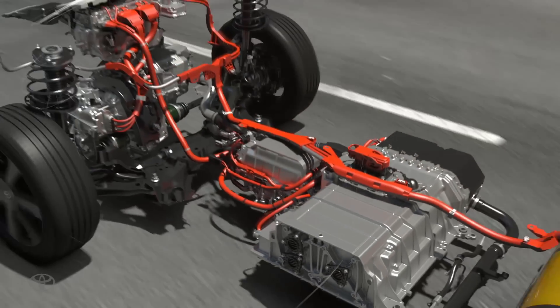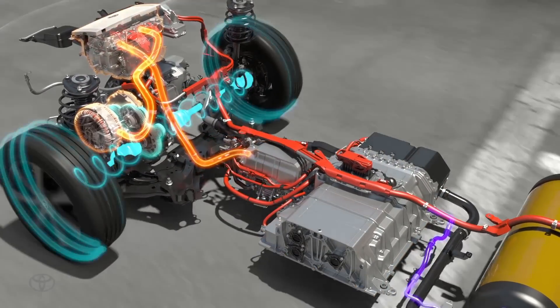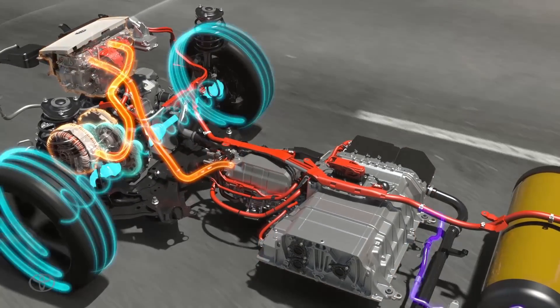Hydrogen and oxygen come together in the fuel cell stack to supply the electricity to the electric motor via the power control unit.